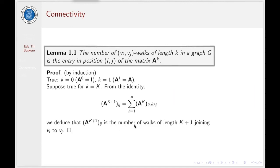By induction hypothesis, this entry represents the number of walks of length K from I to H. This entry HJ can be either 0 or 1. Altogether, the sum of this multiplication gives us the number of walks of length K plus 1 joining vertex VI to vertex VJ. So we have proved this lemma.